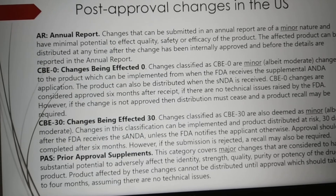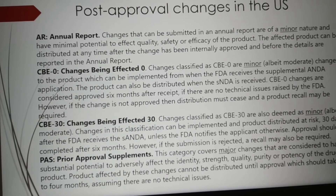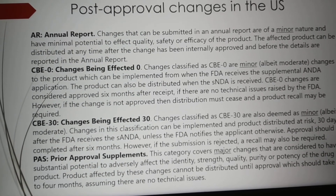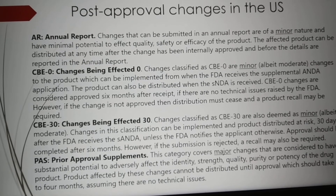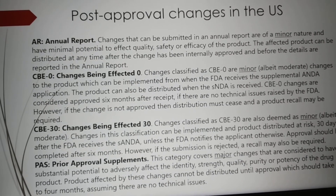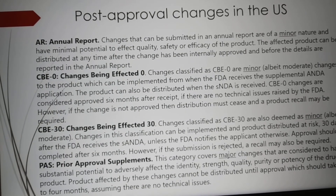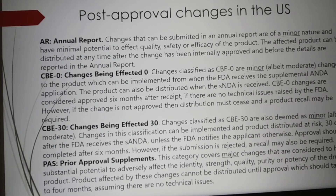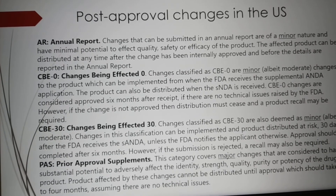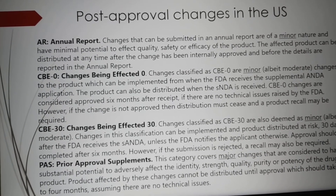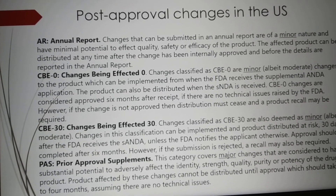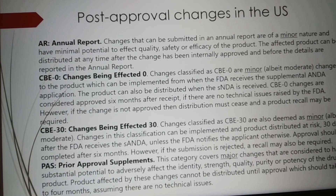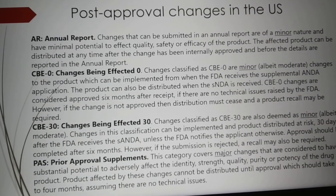The last category is PAS, Prior Approval Supplement. This category covers major changes — changes to the drug product that are considered to have significant impact on quality, safety, and efficacy. With these changes, the product cannot be distributed to the market until the FDA approves it, and such changes usually take four to six months for FDA approval.